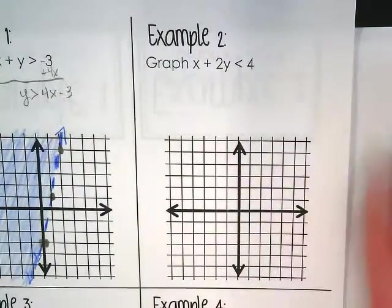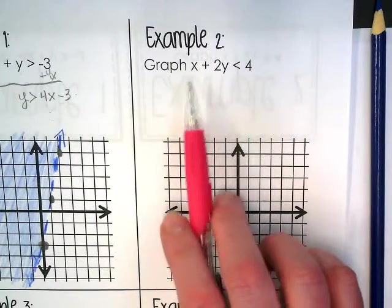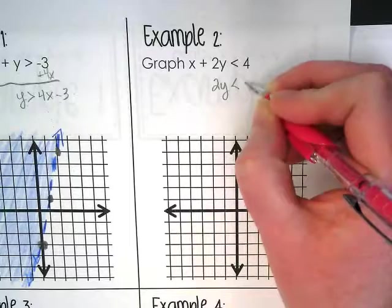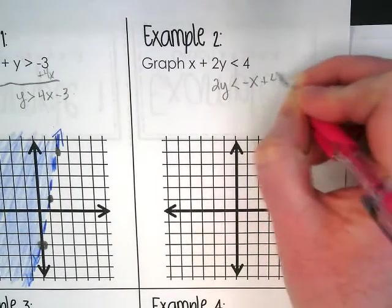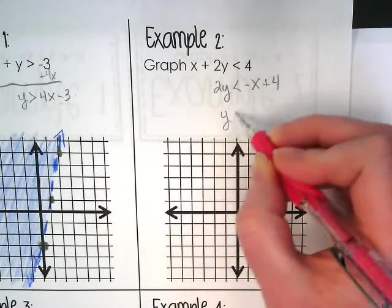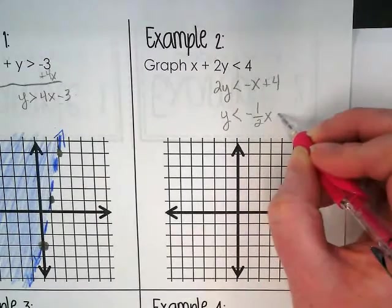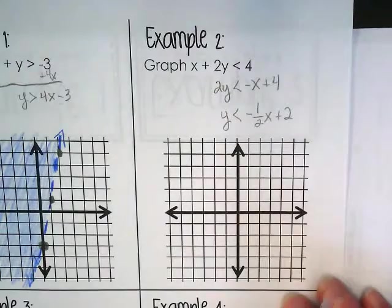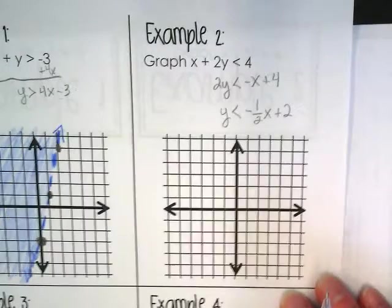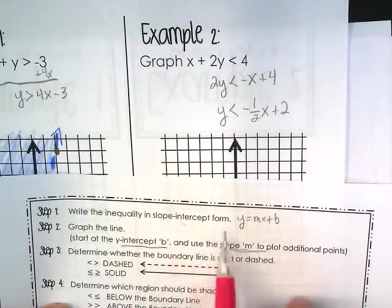So let's look at example two. Using your regular pencil. Is this in slope-intercept form right now? No. So we need to move the X. And it's going to become a negative X. And then we have to divide by two. Y is then going to be less than negative one-half X plus two. So that's our first step. We've written the inequality in slope-intercept form.